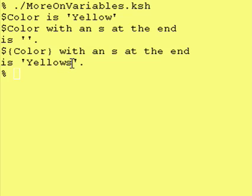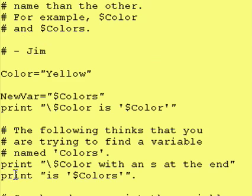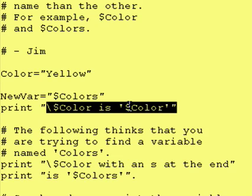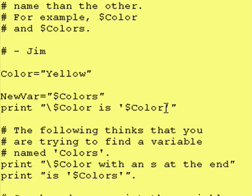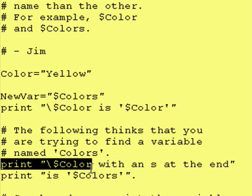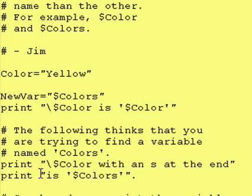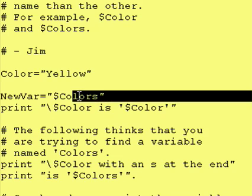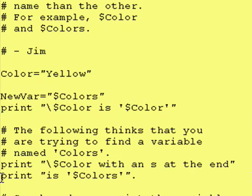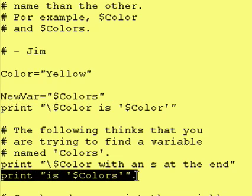So let's actually run this. The first thing we did was print the value within color right here — and once again, the single quotes are perfectly fine; they don't do any escaping if they are inside of double quotes. The second thing we tried to print was the variable color with an s at the end, like we did for the assignment statement here. Let's take a look at the output.